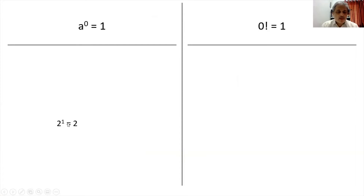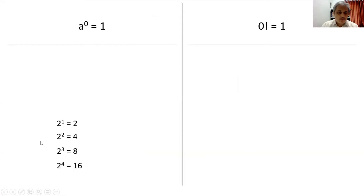We know that 2 raised to 1 is equal to 2, 2 raised to 2 is equal to 4, 2 raised to 3 is equal to 8, 2 raised to 4 is equal to 16, and 2 raised to 5 is equal to 32, and so on.